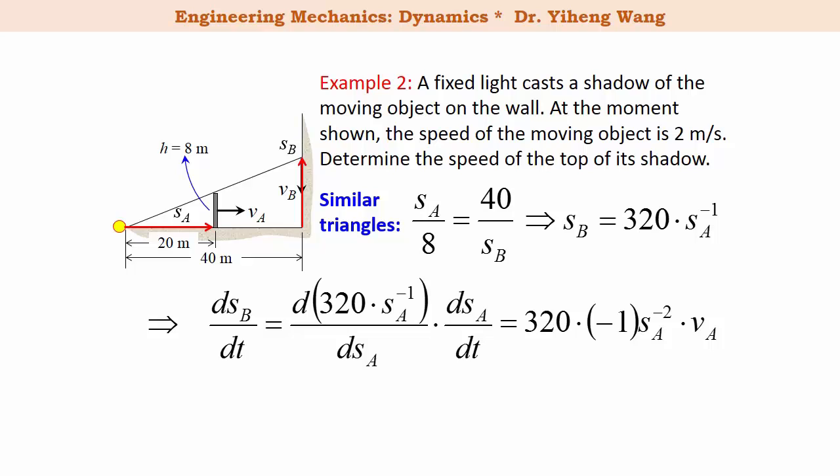Therefore, since we know that SA equals to 20 meters and VA equals to 2 meters per second, we substitute those in, we can calculate VB to be negative 1.6 meters per second. Negative sign indicates that the top of the shadow moves downwards.